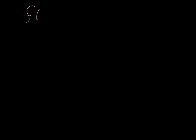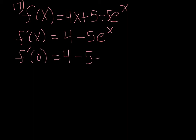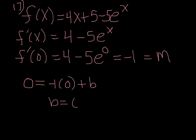Number 17: let f of x equal 4x plus 5 minus 5e to the x. Find the equation of the tangent line. The derivative is 4 minus 5e to the x, because the derivative of e to the x is just e to the x. We want the tangent line at (0, 0), so plug in 0: 4 minus 5e to the 0 equals 4 minus 5 times 1 equals negative 1. That's our slope. Plugging (0, 0) into y equals mx plus b, we find b equals 0. So m equals negative 1 and b equals 0.